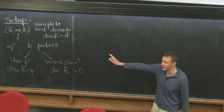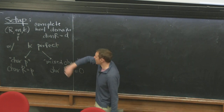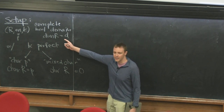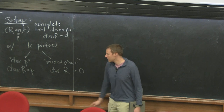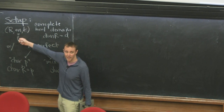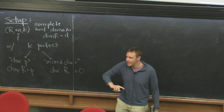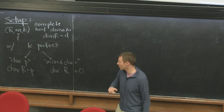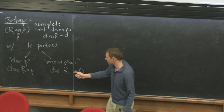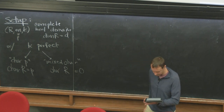Let me fix the following setup for the rest of today's talk. So let R, M, K be a complete local domain, usually of dimension d. P is inside the maximal ideal. There are two cases: either the characteristic P case, meaning equal characteristic P, where the characteristic of R is also P, and the mixed characteristic case, where the characteristic of R is zero.